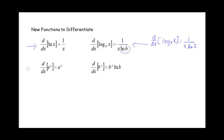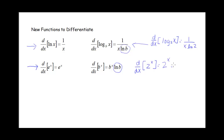Now let's look at the exponential functions. If you're taking the derivative of e to the x, you just get e to the x. And if we're doing a different base other than base e, then just like with the log, we have an extra factor of the natural log of b. For instance, if we were taking the derivative of 2 to the x, it's going to be 2 to the x times the natural log of 2.